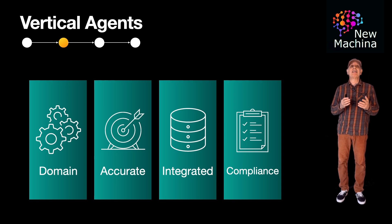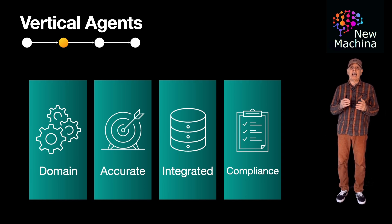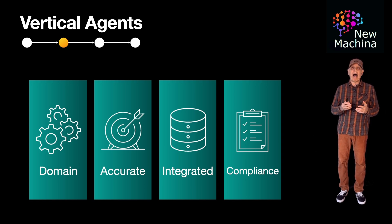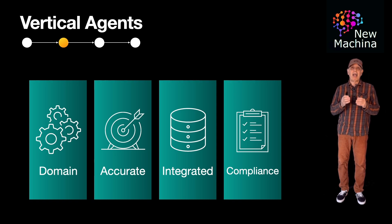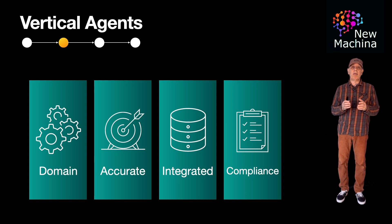So what are some examples of vertical agents? In the legal domain, imagine a legal assistant that drafts contracts or summarizes legal documents. In healthcare, imagine a medical co-pilot that helps doctors interpret patient symptoms and suggests a diagnosis. In customer service, imagine a customer service chatbot trained specifically for a telecom company's proprietary support processes.